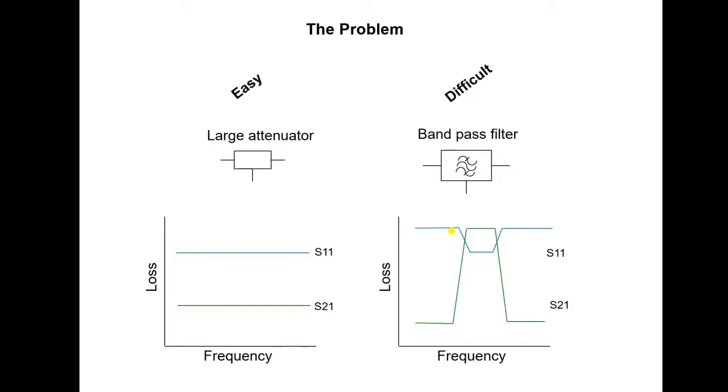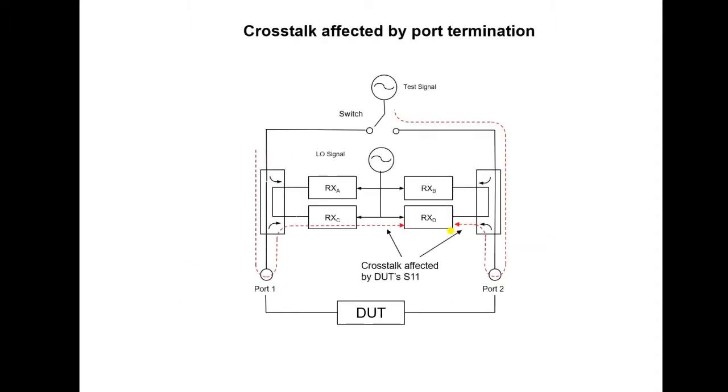Let's expand on that. Here, we have a simplified block diagram of the VNA. Assume we have a situation where we want to make a measurement in the forward direction. We have the forward reverse switch in the forward direction here, and the test signal is diverted to port 1.